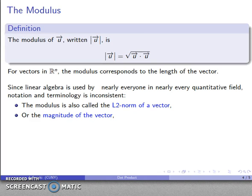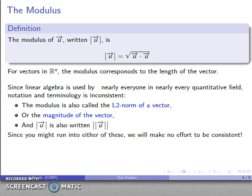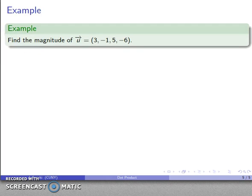But we could also talk about it as the magnitude of the vector, and the notation where we're writing single bars is sometimes also written using double bars to distinguish it from absolute value. And since I can't predict what context or field you're going to be using linear algebra in, you might as well get used to all the forms of notation. And to prepare you for that, we will make no effort whatsoever to be consistent in our notation or our terminology.